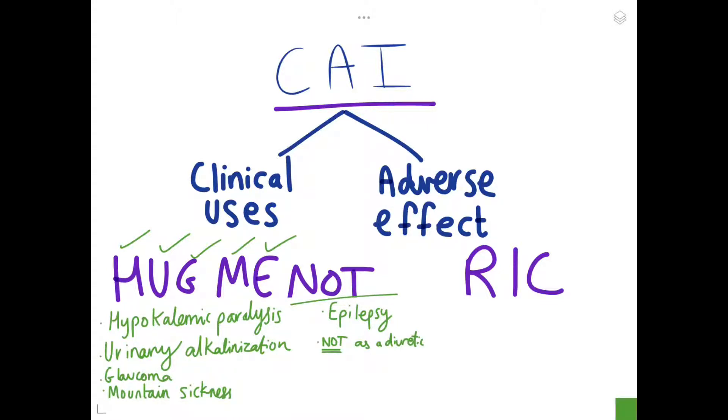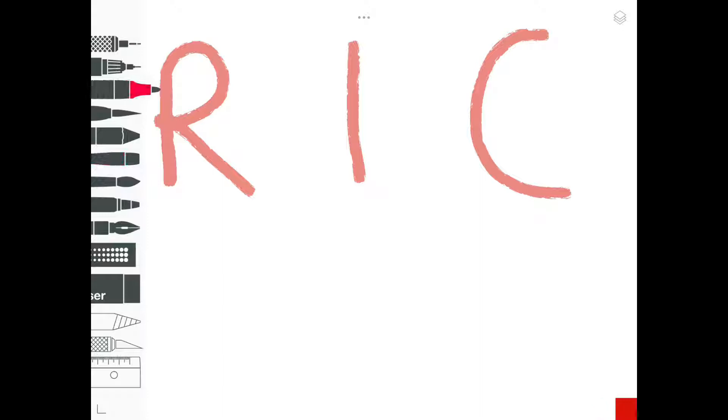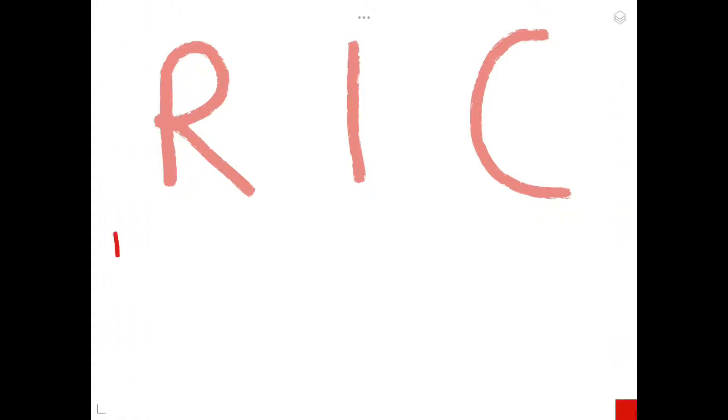Now on to the adverse effects. So the mnemonic that I shared is RIC, right? And you're gonna remember this very simply because R is for renal effects, I is for ionic effects, and C is for CNS effects.